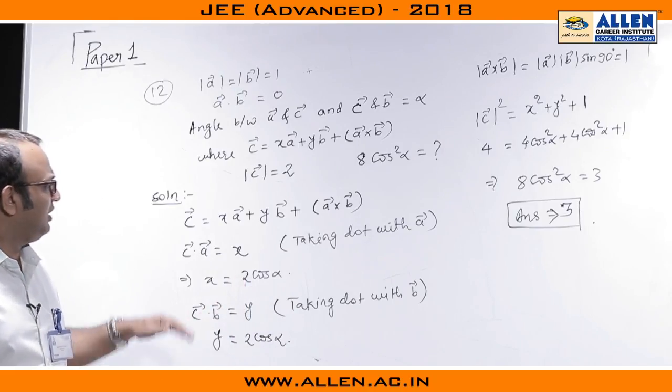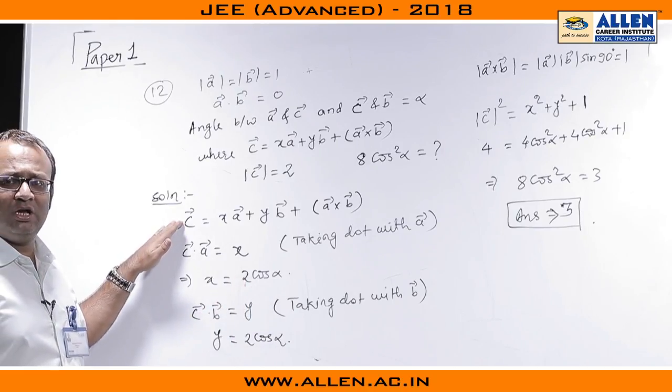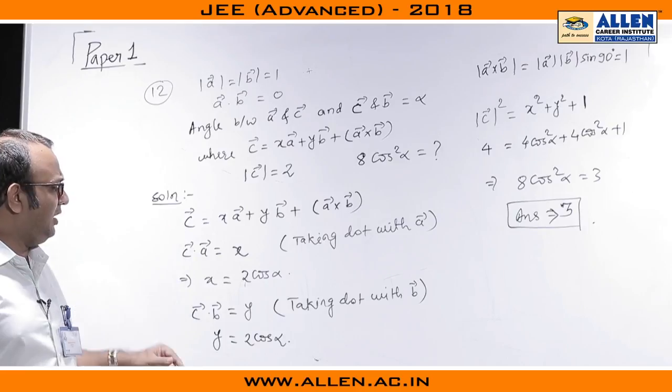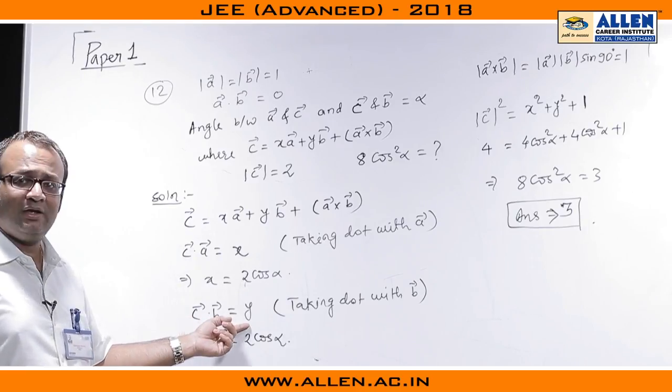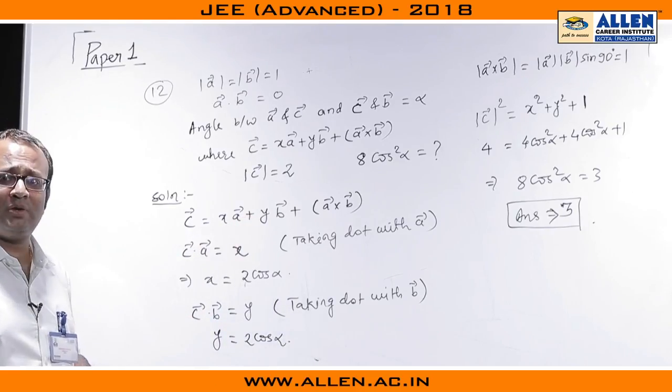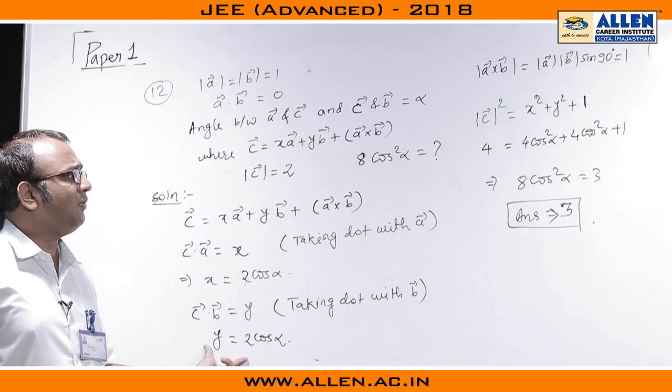In the similar manner, if I will take the dot of this particular equation with vector B, I will be having C dot B equals to Y, rest all will vanish because of perpendicularity and Y will be equal to 2 cos alpha.